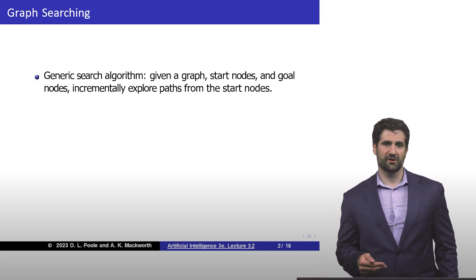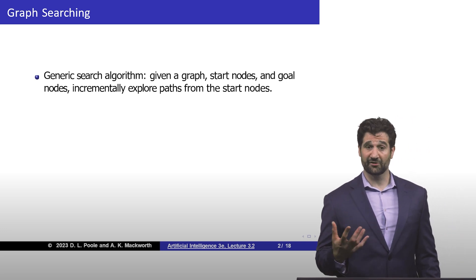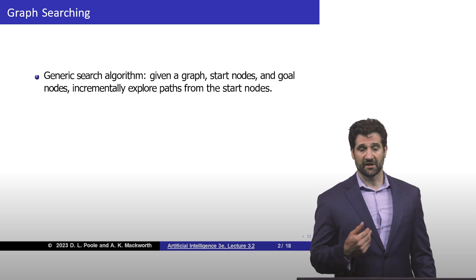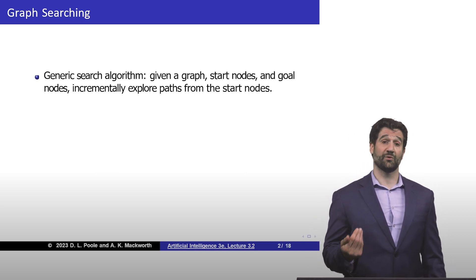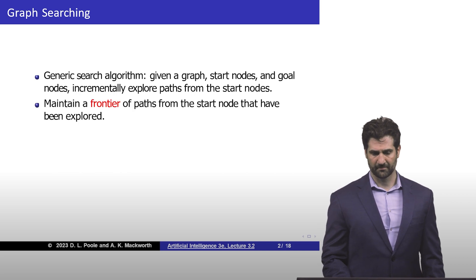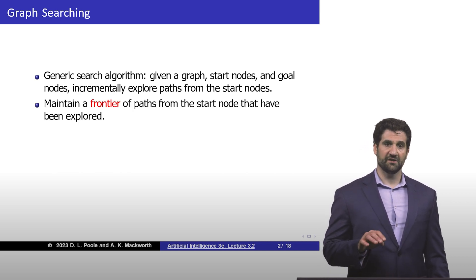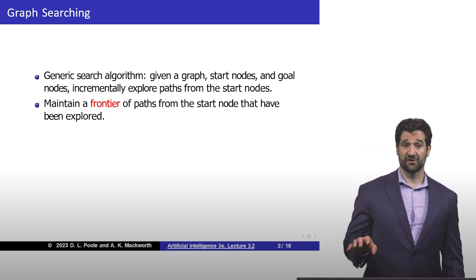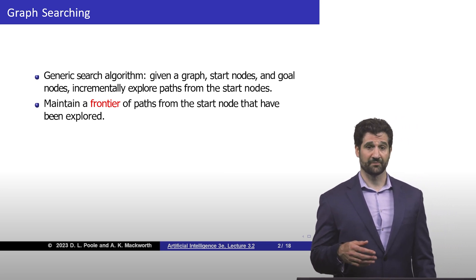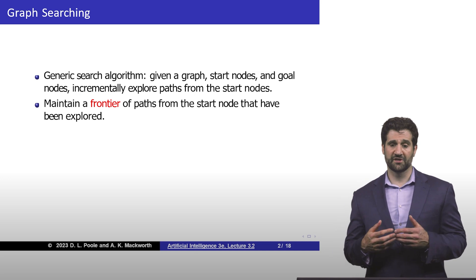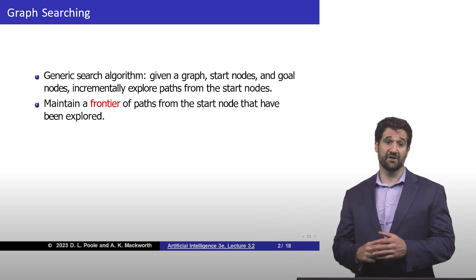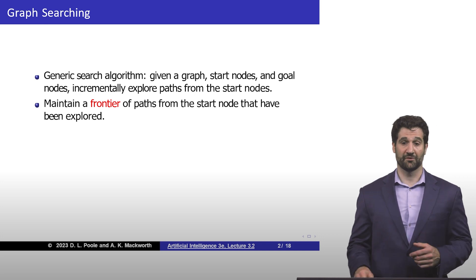First we're going to start by introducing a generic search algorithm that's a little bit underspecified. This is going to help our basic way of thinking and point out where differences could be. The key idea in this generic graph searching algorithm is this notion of a frontier. The frontier is a list of nodes that we're going to be exploring next, hence the word frontier.